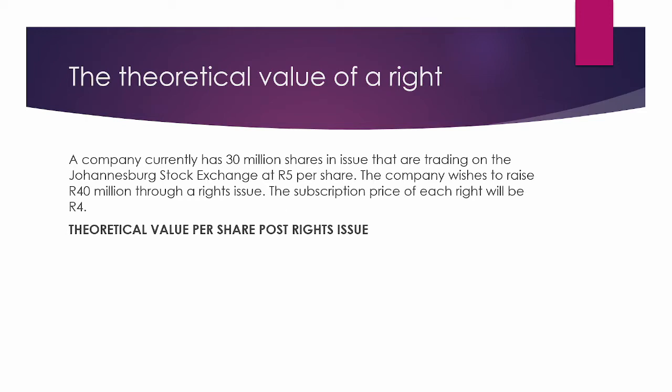The next item we need to calculate is the theoretical value per share after the rights issue. To do this, we first need to calculate the theoretical market value of the company as a whole after the rights issue, and then divide this by the number of shares in issue. We calculate the current market value of the company as 30 million shares multiplied by the current share price of 5 Rand, giving us 150 million Rand.